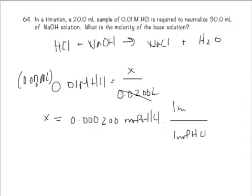This is moles of HCl. According to the balanced formula, for every one mole of HCl, I have one mole of NaOH, sodium hydroxide, and it's asking for the molarity of the basic solution.